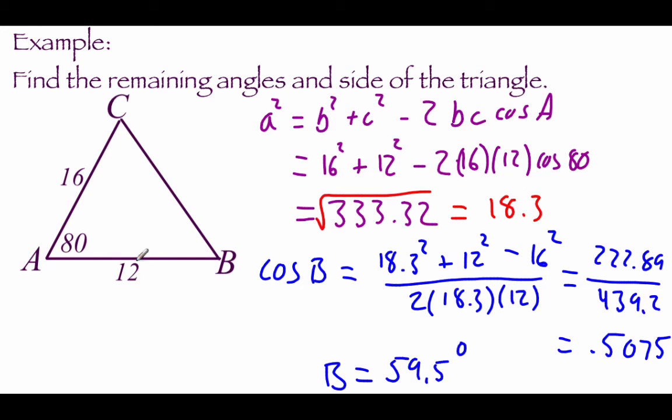We've now got two angles inside our triangle, so using what we know about angles, angle C ends up being 40.5 degrees.